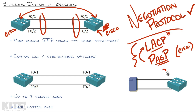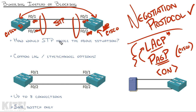You can also turn on EtherChannel and LAG without a negotiation protocol — think of that as the 'on' switch. That is really dangerous, because you're telling switch one this will always be an EtherChannel, and relying on the administrator on the other side to have also configured it as 'on'. What if you forgot to type the 'on' command on that port? Now you've got one side thinking the connection is bundled and the other thinking it's a normal link. Spanning Tree doesn't detect this misconfiguration, and you could end up with a loop — broadcast will flow everywhere, network explosion. That's why it's best to use a negotiation protocol.